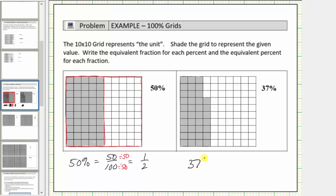Here's the model for thirty-seven percent. As a fraction, thirty-seven hundredths equals thirty-seven hundredths. A percent is always a number compared to one hundred, and this fraction does not simplify.